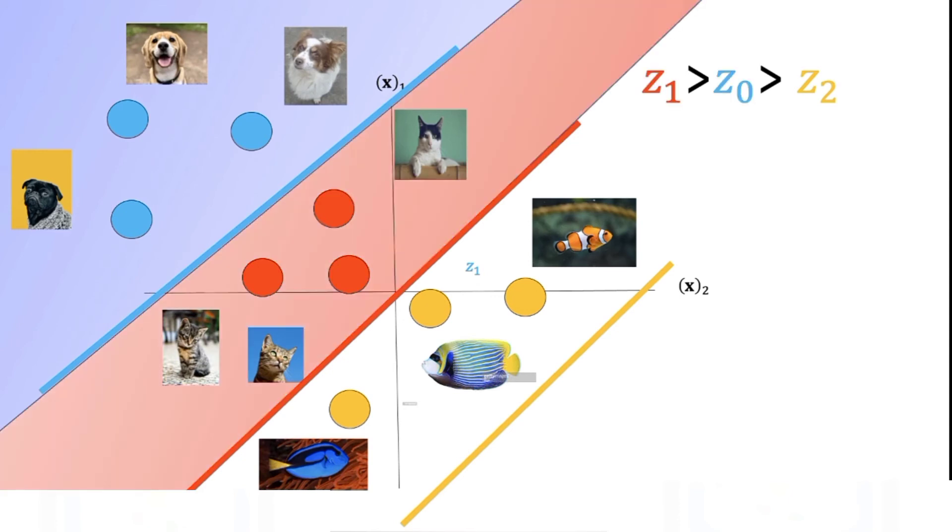If the input is in the red region the value of z1 corresponding to equation 1 is the largest. Therefore anything in this region will be in class 1. If the input is in the yellow region the value of z2 corresponding to equation z is the largest. Therefore anything in this region will be in class 2.